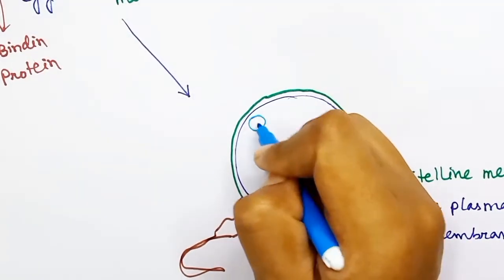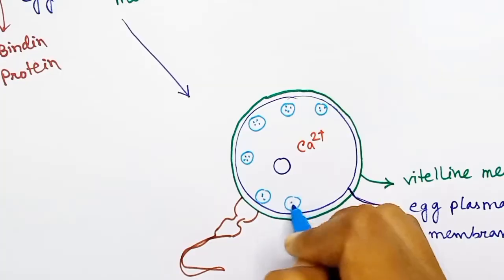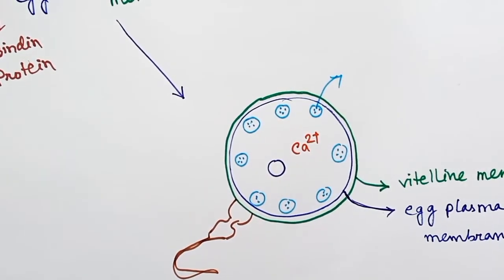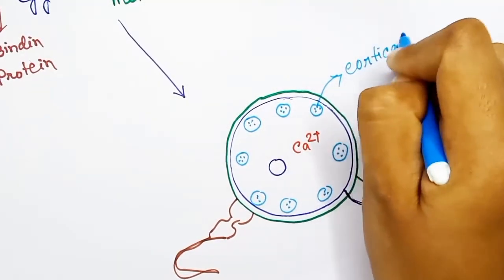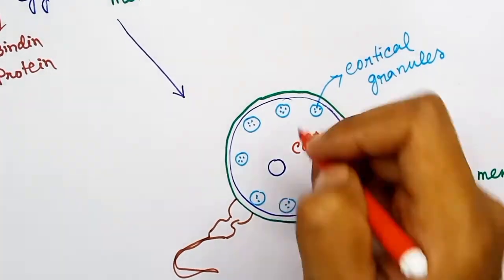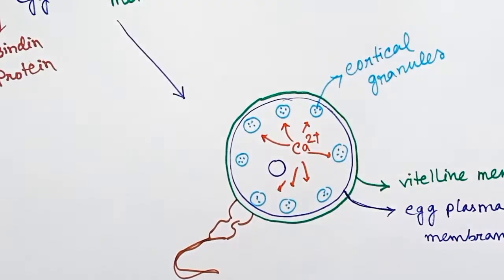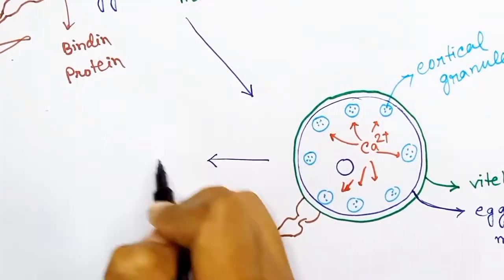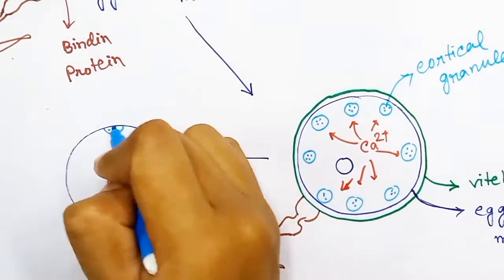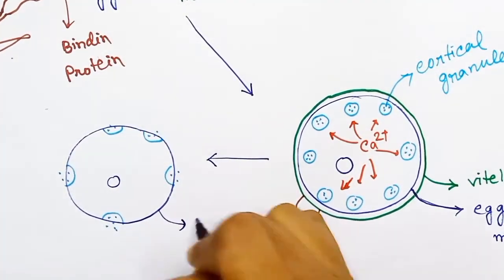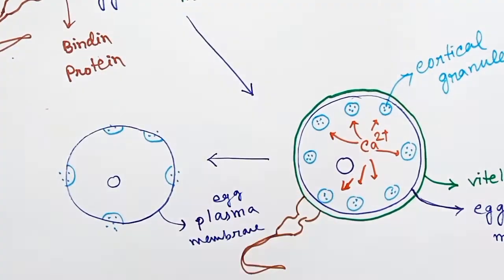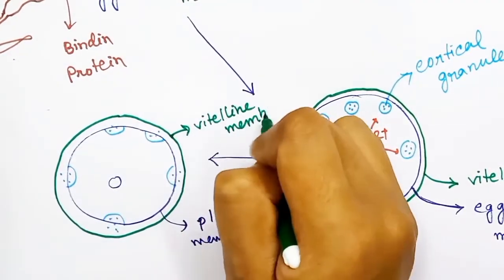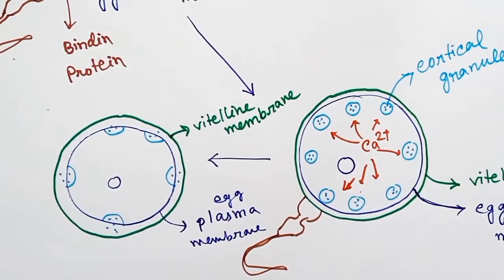There are some granular vesicles present in the cytoplasm of the ovum. These granules are called cortical granules. Due to the increase in calcium in the cytoplasm, these cortical granule vesicles fuse with the plasma membrane of the ovum, and the granules are released in the space between the plasma membrane and the vitaline membrane. This space is known as perivitaline space.